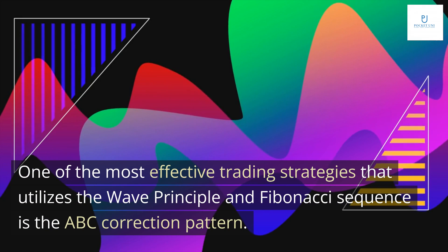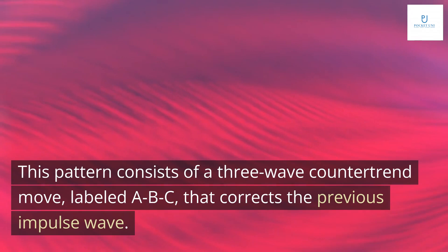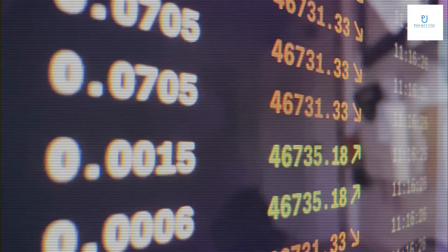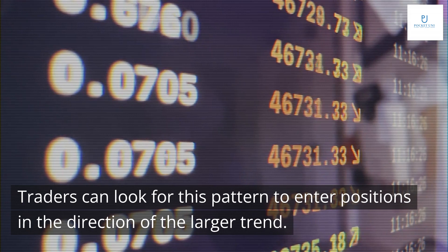One of the most effective trading strategies that utilizes the wave principle and Fibonacci sequence is the ABC correction pattern. This pattern consists of a three-wave countertrend move, labeled ABC, that corrects the previous impulse wave. Traders can look for this pattern to enter positions in the direction of the larger trend.